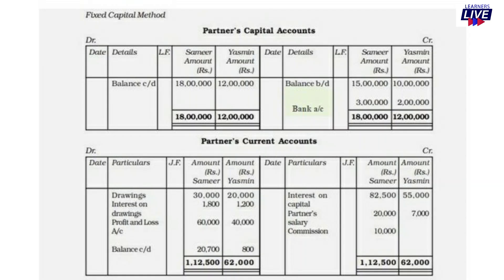Interest on capital is credited to partners' current accounts: Samir Rs. 82,500, Yasmin Rs. 55,000. Drawings are on the debit side: Rs. 30,000 and Rs. 20,000. Interest on drawings also on the debit side: Rs. 1,800 and Rs. 1,200. Salary is on the credit side: Rs. 20,000 and Rs. 7,000.